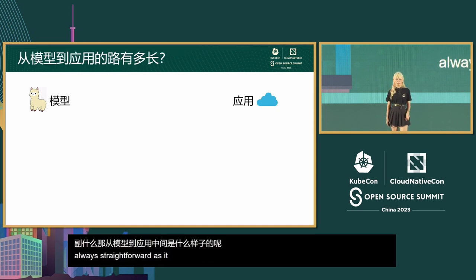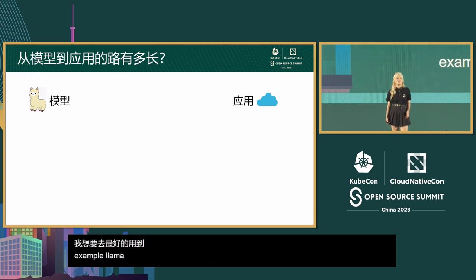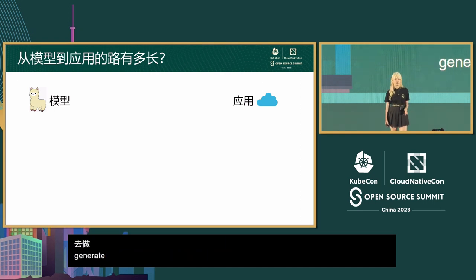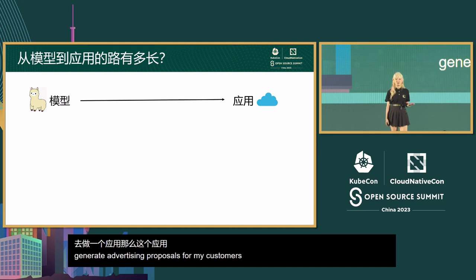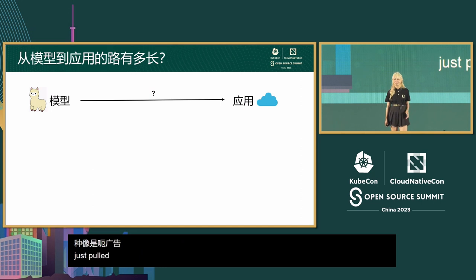As a developer, if I want to leverage the power of an open source model — for example, LLaMA — to build an application that can generate advertising proposals for my customers, how long is the road from the open source model I just pulled to an application that is ready for use on cloud?